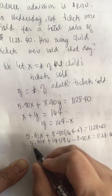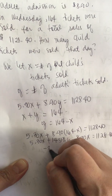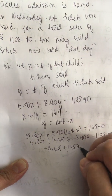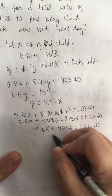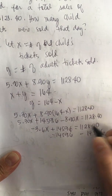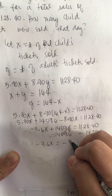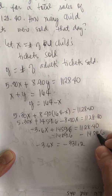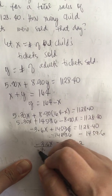Combining like terms: 5.30x minus 8.90x equals negative 3.6x. So negative 3.6x plus 1,459.60 equals 1,128.40. Subtracting 1,459.60 from both sides, negative 3.6x equals negative 331.20. Then we divide negative 3.6 to both sides of the equation.